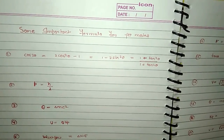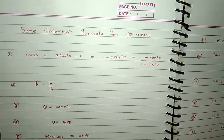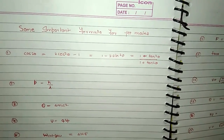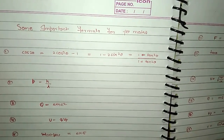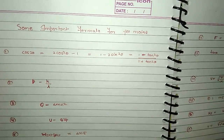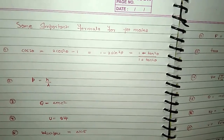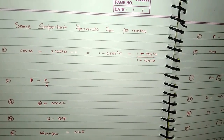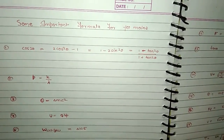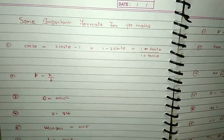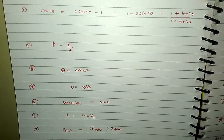Important formulas for JEE. cos 2θ = 2cos²θ − 1 = 1 − 2sin²θ = (1 − tan²θ) / (1 + tan²θ). Momentum p = h / λ.